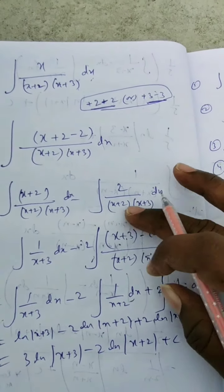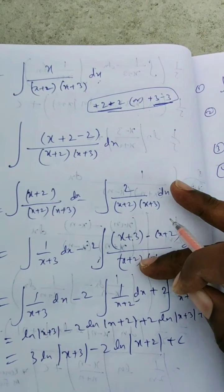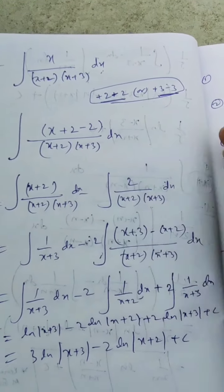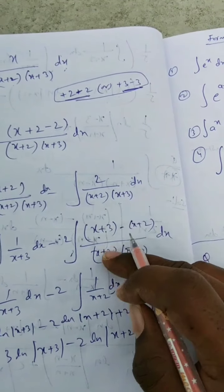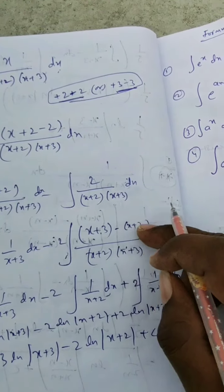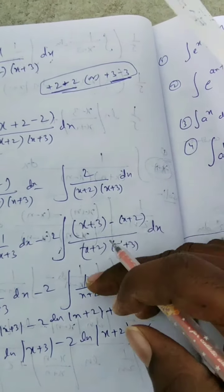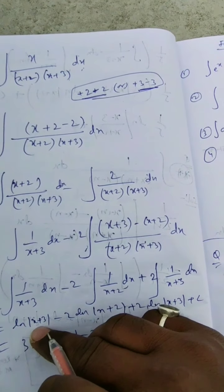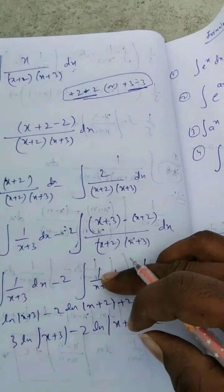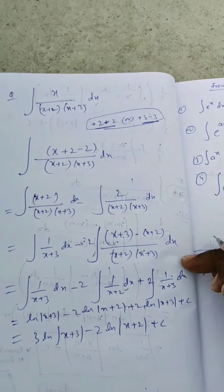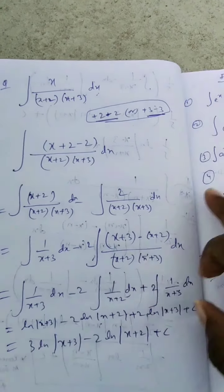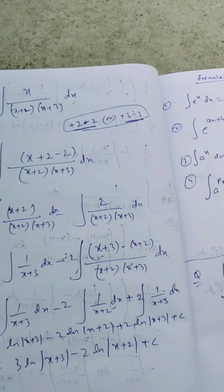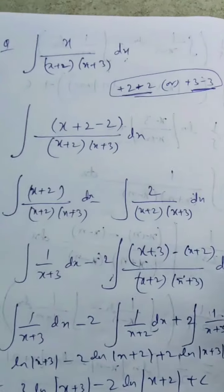For the remaining part, minus 2 into integration of 1 by x plus 2 into x minus 3 dx, use the difference technique again: x minus 3 minus x plus 2 upon x plus 2 into x minus 3. Separating gives ln|x minus 3| minus 2 times ln|x plus 2| plus 2 times ln|x minus 3| plus c. Combining: 3 ln|x minus 3| minus 2 ln|x plus 2| plus c. That is the answer.